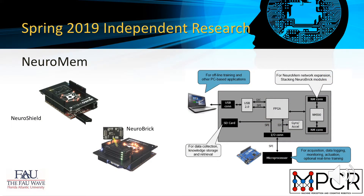The next device we evaluated is the NeuroMem chip. A NeuroMem chip has 576 hardware neurons used to process incoming data vectors, where a vector is an array of data such as image data. The NeuroMem chip is used to build NeuroShield, an evaluation board that plugs into a standard Arduino computer. It has one NeuroMem chip plus an FPGA that holds the whole system together. These NeuroShields can be augmented with additional modules known as NeuroBricks, with each NeuroBrick containing two NeuroMem chips for an additional 1,152 neurons.